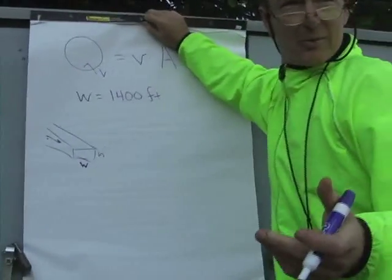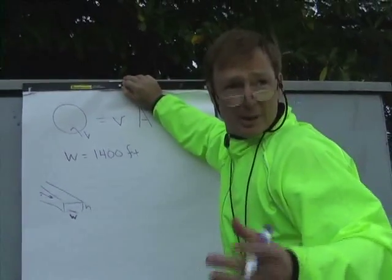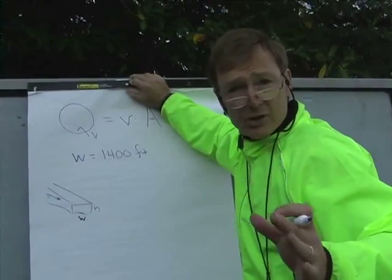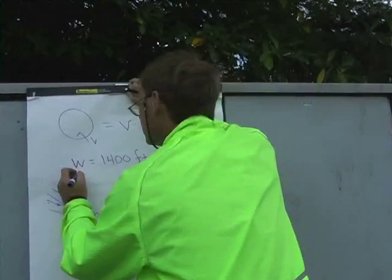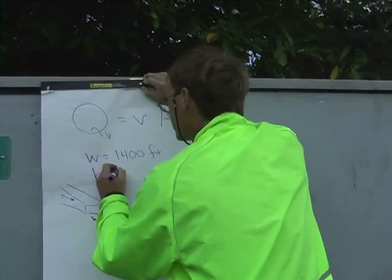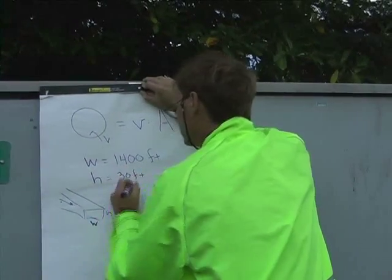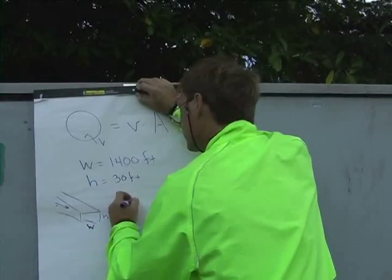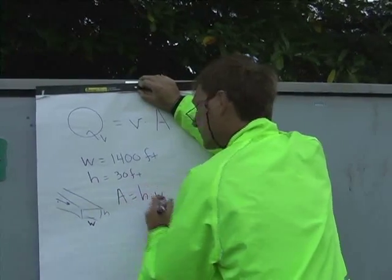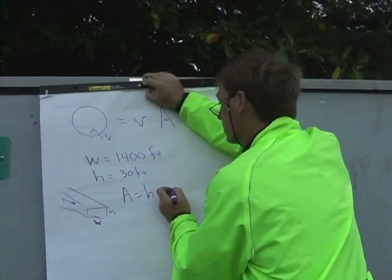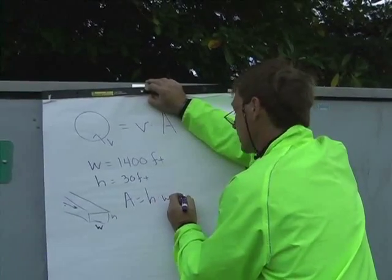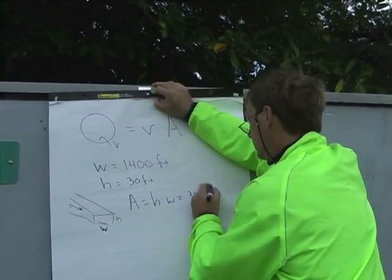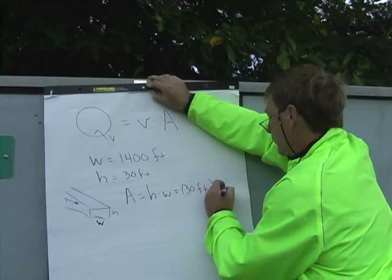Now I've dived this, and I remember we got down to about 40 feet, but it gets narrower on the sides. So let's say it's got an average depth of about 30 feet. So the height of the water is 30 feet. The area is the height times the width, which is 30 feet times 1,400 feet.